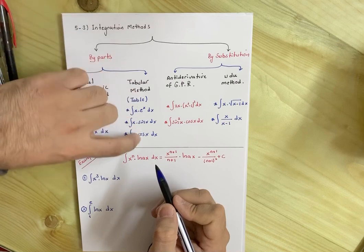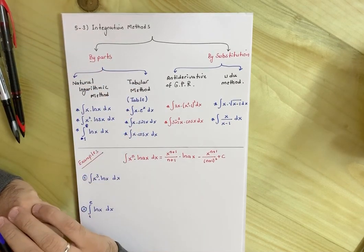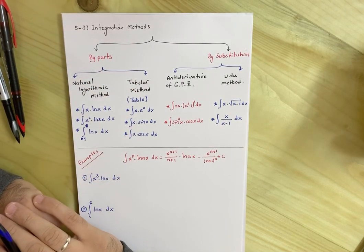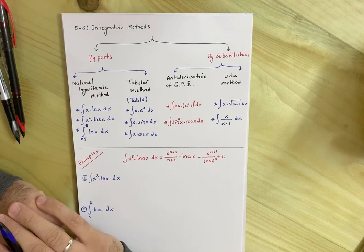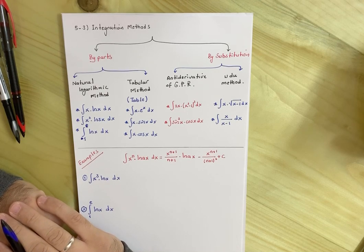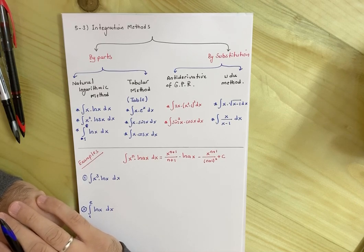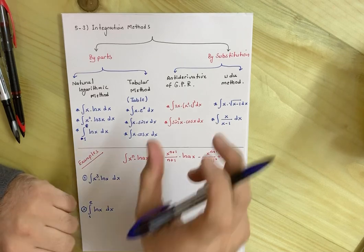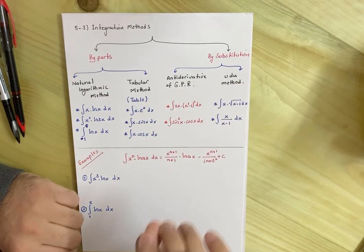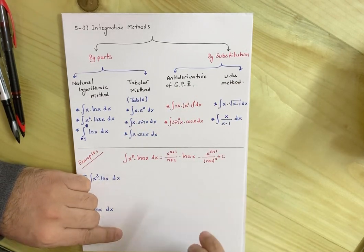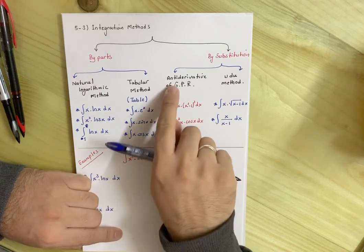So these two types we call them integration by parts. Let us come to integration by substitution. For all the students who remember rule number 12 in chapter 3 section 2, rules of derivative, it was general power rule. Here, this one is the anti-derivative of general power rule in two cases. First case, we call it anti-derivative of general power rule.